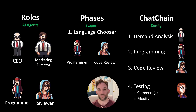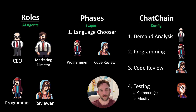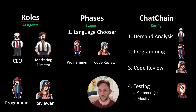Next we have phases. This is the stage or task that you want to give to each of your AI agents. In this example, we have a language chooser — we're going to tell a programmer and code reviewer that when it comes time for them to do something, we want it done in Java, Lua, Python, or JavaScript, whatever it is.